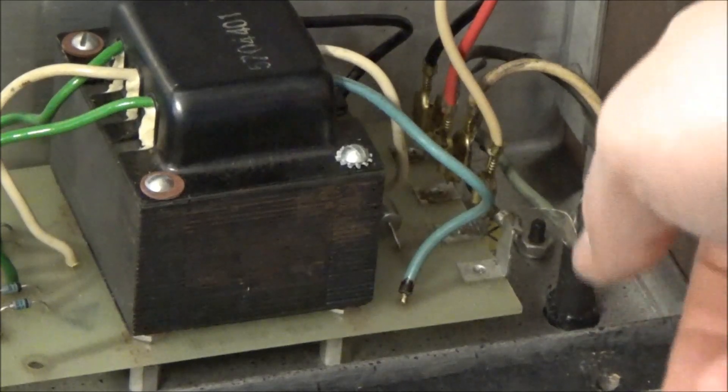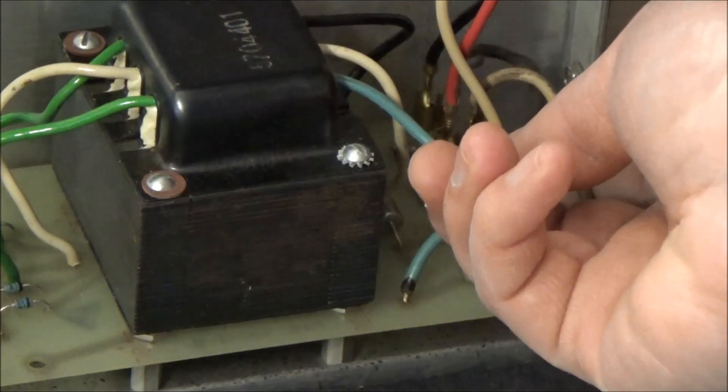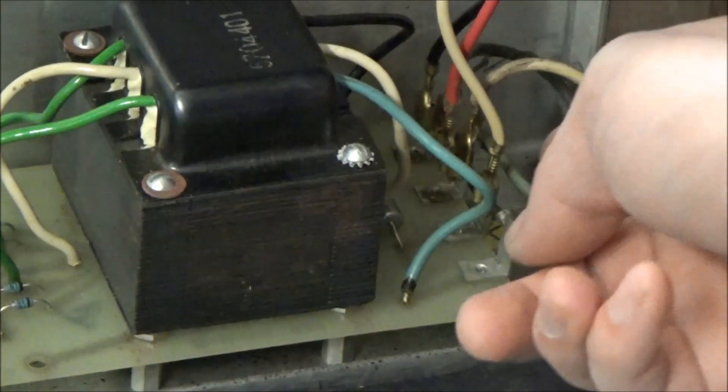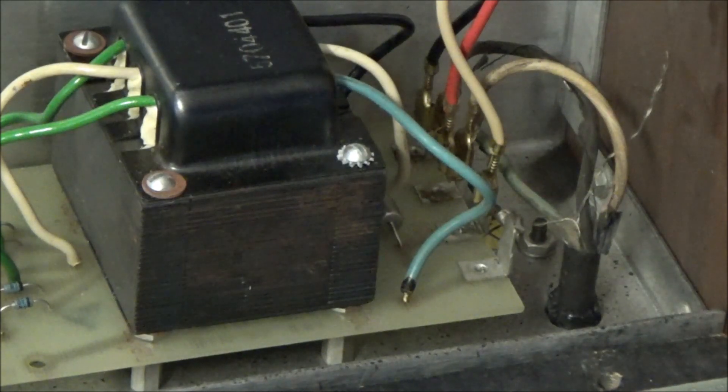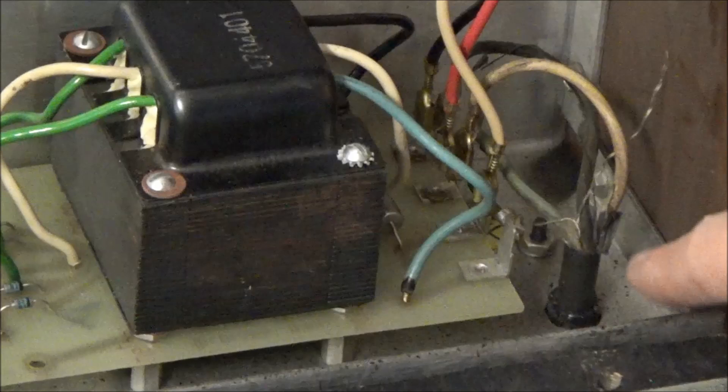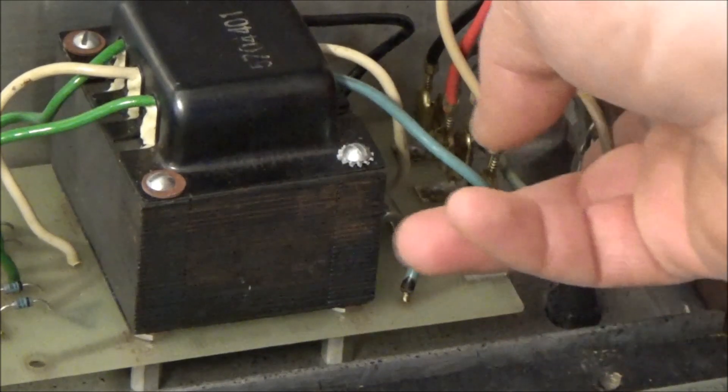All right so the power cord has three wires coming in. There's black here which is hot, white which is neutral, and green which is earth ground. If the power cord's been replaced the colors could be different and some ARPs have an IEC jack instead of a hardwired power cord. Let's start by following each of these wires starting with the hot, the black one.